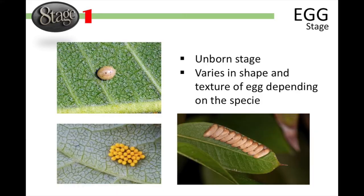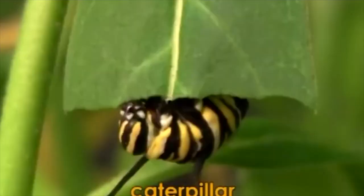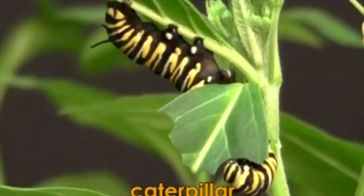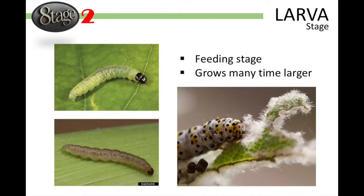Once ready, the larva leaves its egg home and enters the big outside world, and these little critters have one serious appetite. They usually eat their way out of the egg and immediately start chomping on the leaves of the host plant. During this stage, they shed their skin four or five times and grow many times larger than when they emerged from their egg.